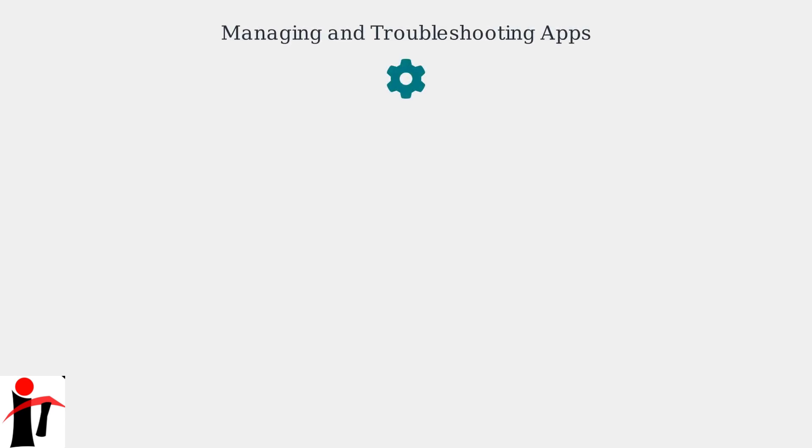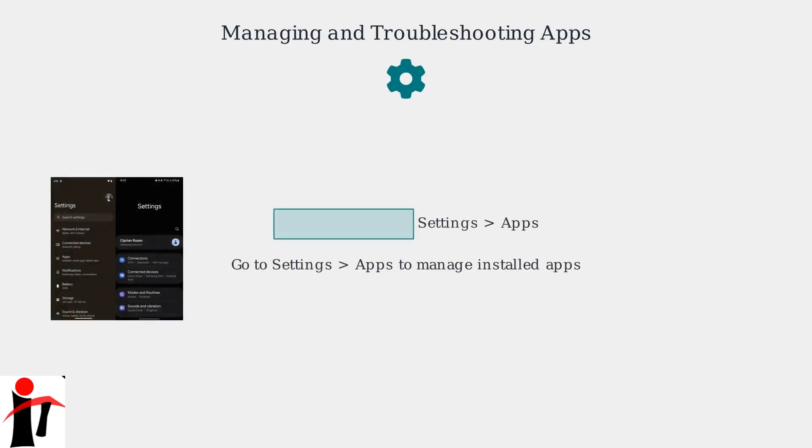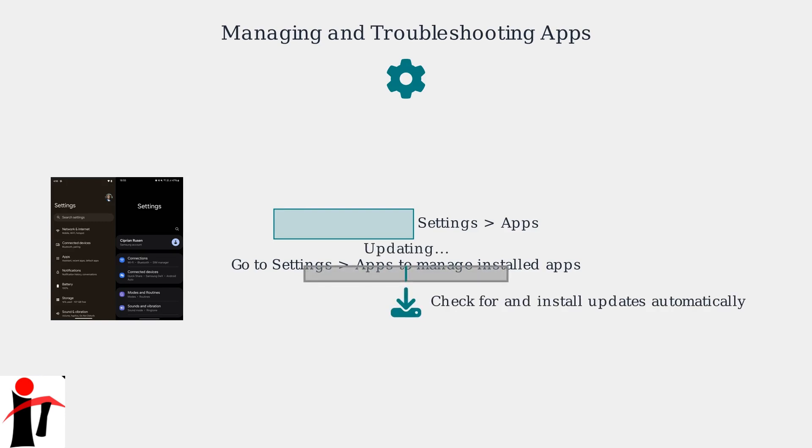To manage your installed apps, go to Settings, then Apps. Here, you can check for and install updates automatically.